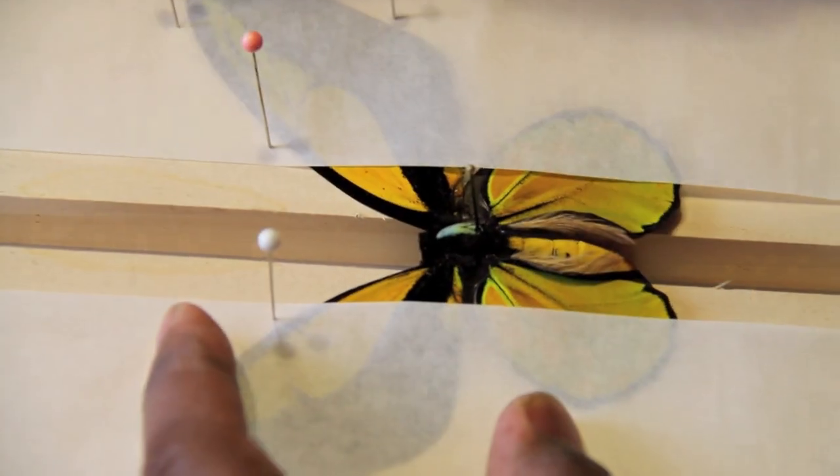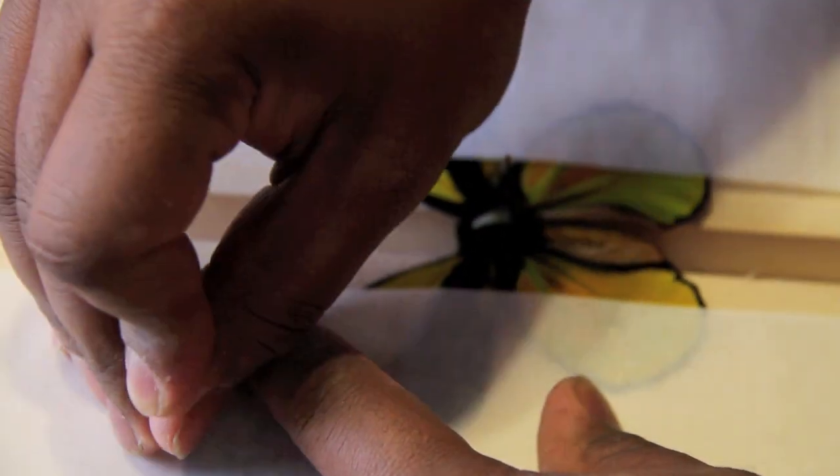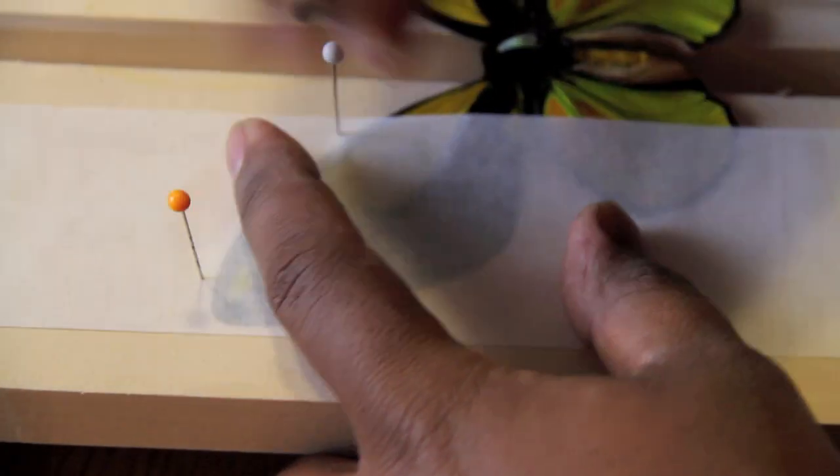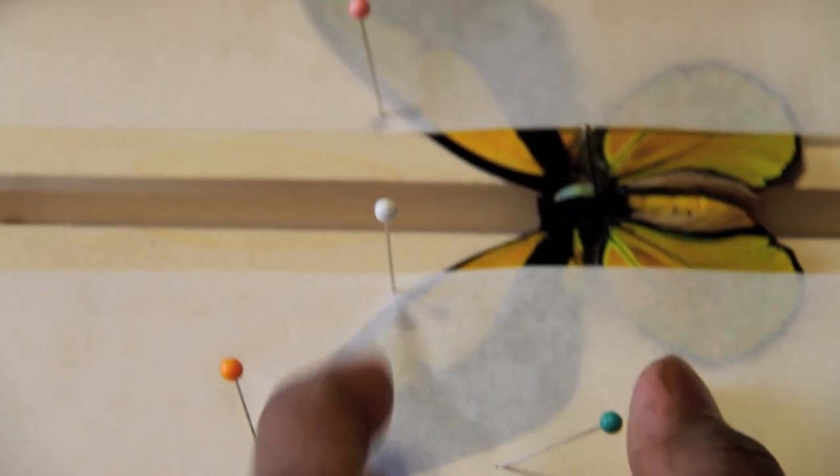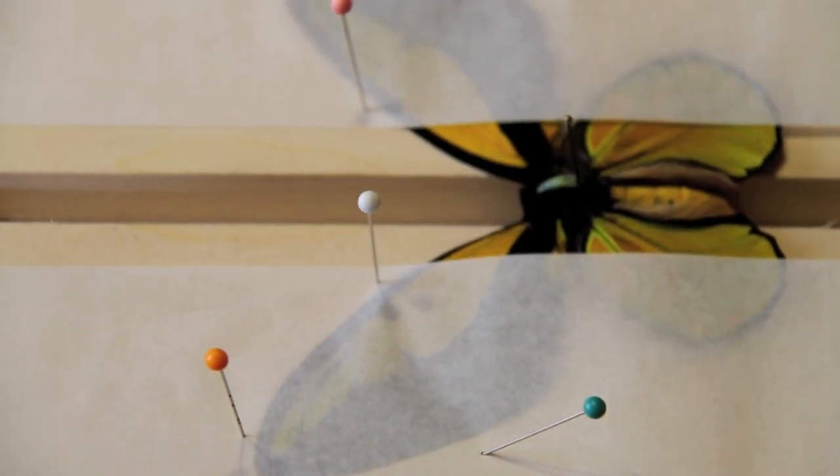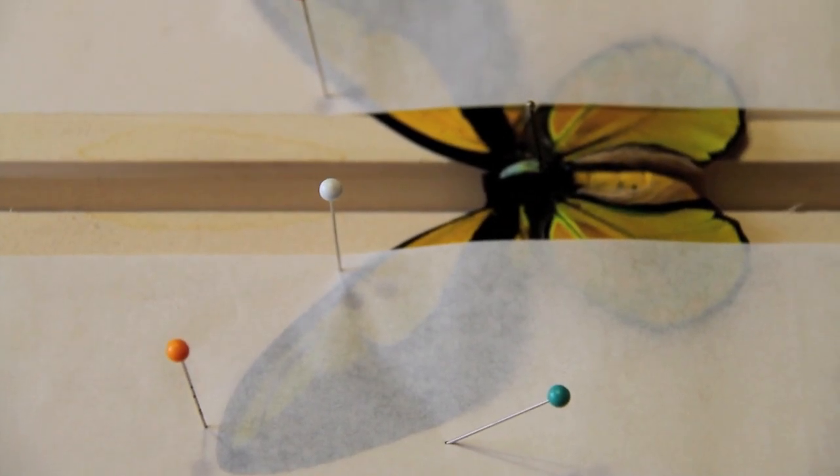And now, I'm going to secure them into place. This is very important that you do each step as I've shown it, because if you try to make one side symmetrical and match the other side, the muscles can pull depending on the specimen, and the specimen will no longer be symmetrical.